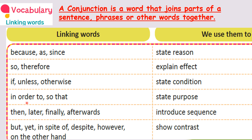Next one is 'in order to' — this is one conjunction. 'In order to' and 'so that' — we use these two to state the purpose. For example: 'In order to reach the goal, I got up early in the morning.' Why did you get up early? In order to reach the goal — that is the purpose. 'I got up early in the morning so that I could reach the goal.'